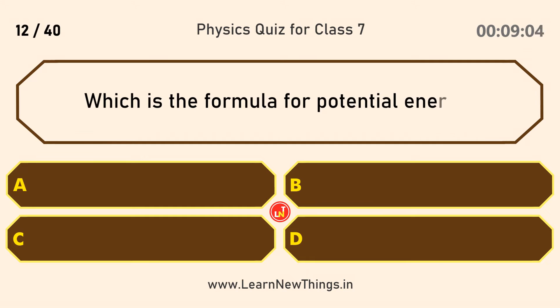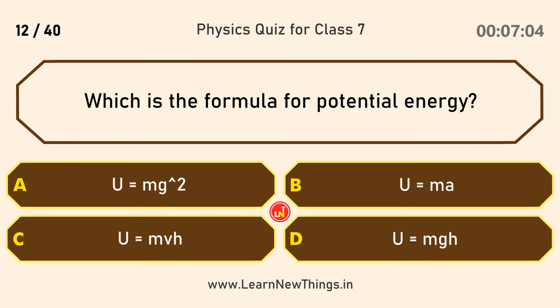Which is the formula for potential energy? U = mgh.